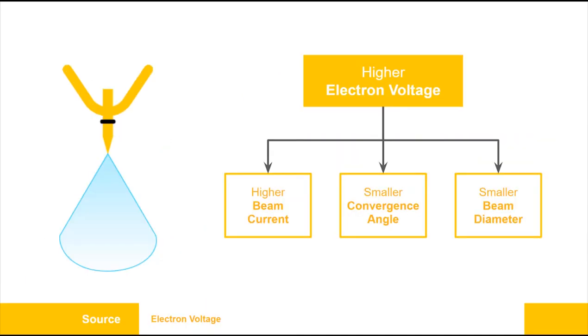The source is possibly the most important, as it is the source of the electrons themselves. The main parameter that you as a user can control is the accelerating voltage of the electrons. Higher voltages will result in a higher number of electrons, a higher current, because you are extracting more electrons at a higher rate from the filament. You will also have a smaller convergence angle since the electrons will be more directed towards that potential. Similarly, you will have a smaller beam diameter because of the directedness of the beam.